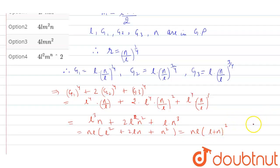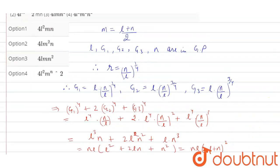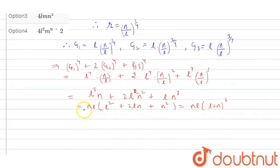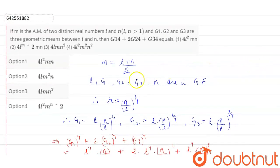So the answer is, as we know l plus n is equal to 2m, we can write this as n l into 2m whole square, which equals 4m square n l. So the answer will be 4m square l n, and that is option 2. Thank you.